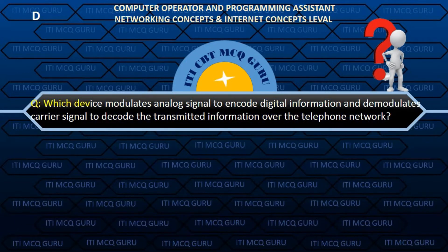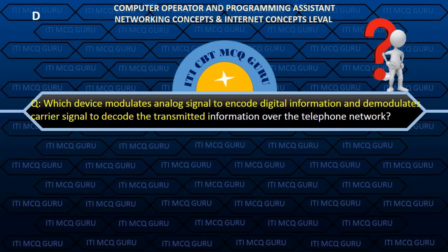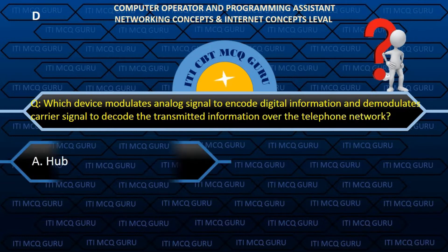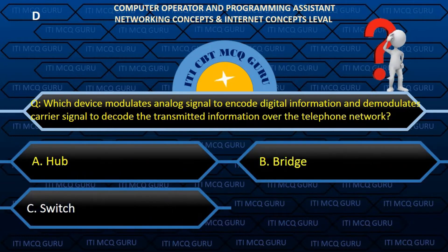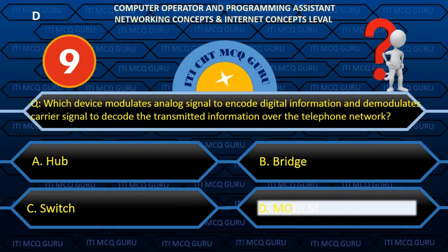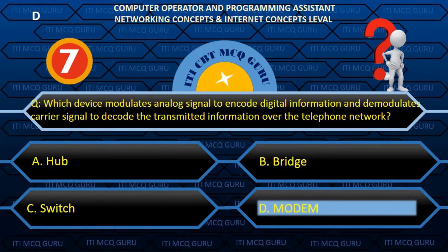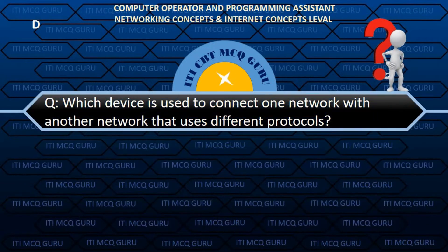Which device modulates an analog signal to encode digital information and demodulates a carrier signal to decode the transmitted information over the telephone network? D. Modem.